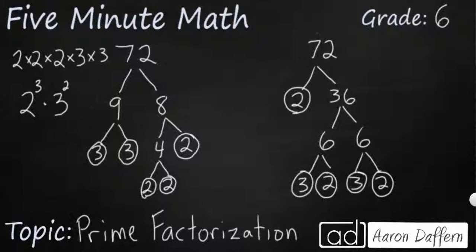We've got 1, 2, 3 2's, 2 to the third, times 1, 2, 3's. So either way you look at it, it's going to be the same.